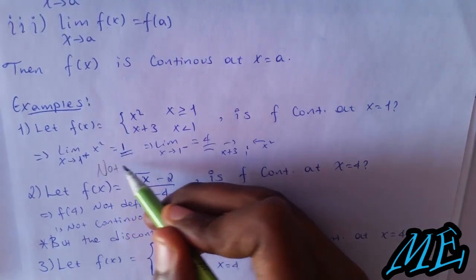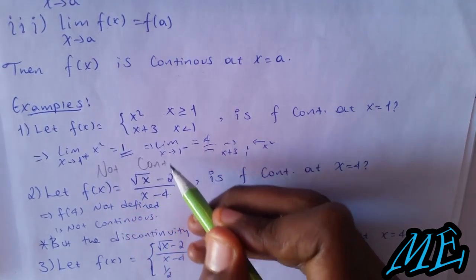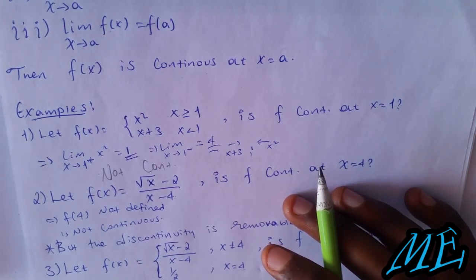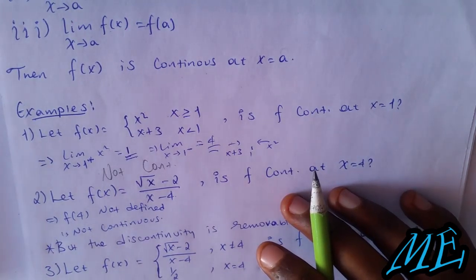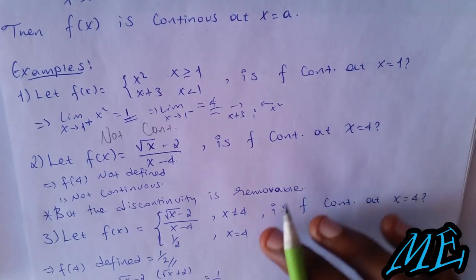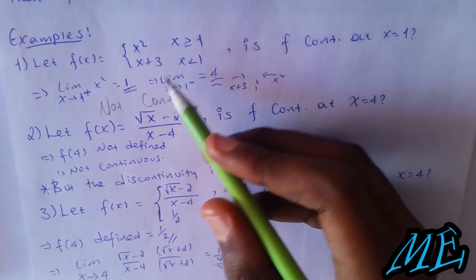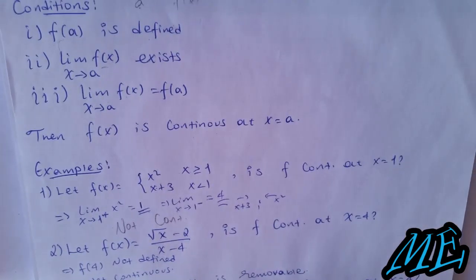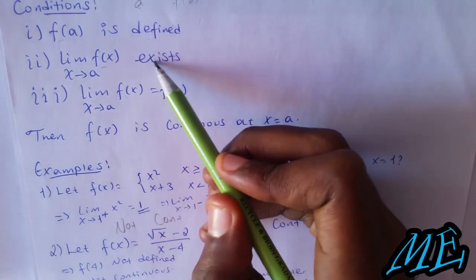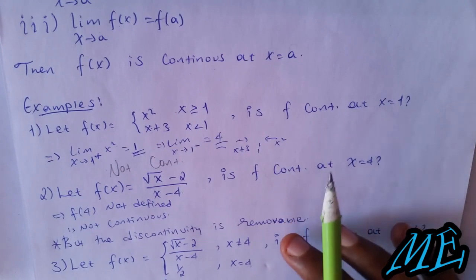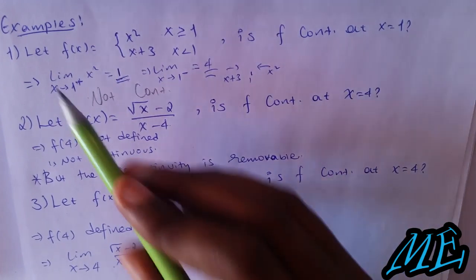Continuous. However, if there's removable discontinuity, we can check. The discontinuity exists at that point. The conditions: the limit exists, and they should be equal.